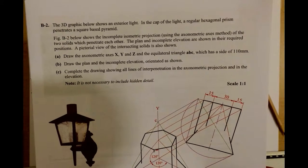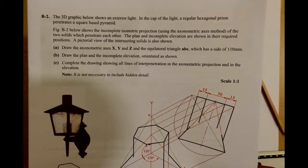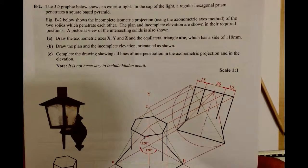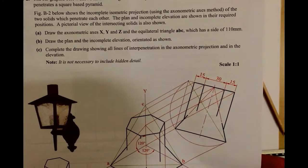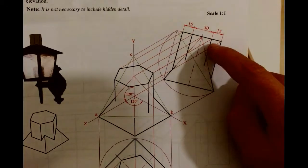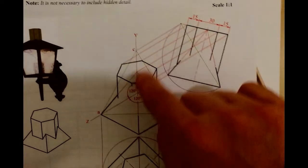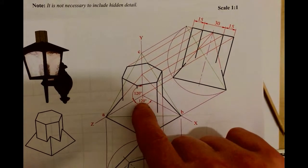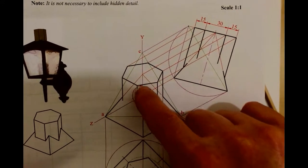This is the 2015 question B2 higher level DCG. The first part is to identify the topic. Reading the question, we can see we have a combination of intersecting solids and axonometric projection. We can distinguish axonometric from diametric and trimetric by the fact that these two angles are the same, meaning this angle here has to be 120 degrees as well.